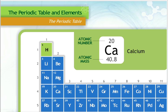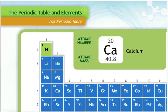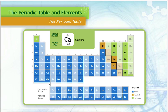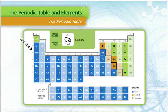Many elements have similar properties which make them behave the same way. They are arranged in vertical columns called groups. The groups are titled using numbers and are labeled across the top of the table.